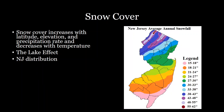Zooming in on New Jersey, it also receives a good deal of snowfall — this is the average annual snowfall in New Jersey. You can see it's concentrated in northern New Jersey around the Delaware Water Gap area, because of the elevation there as well as the higher latitude.